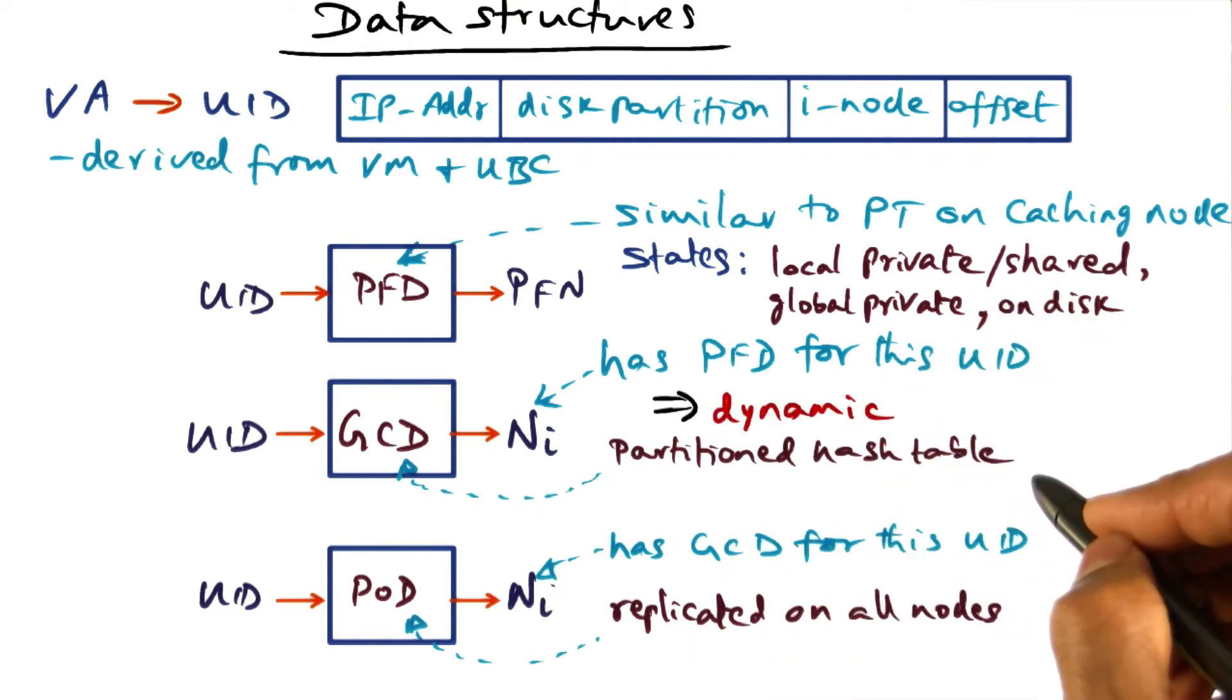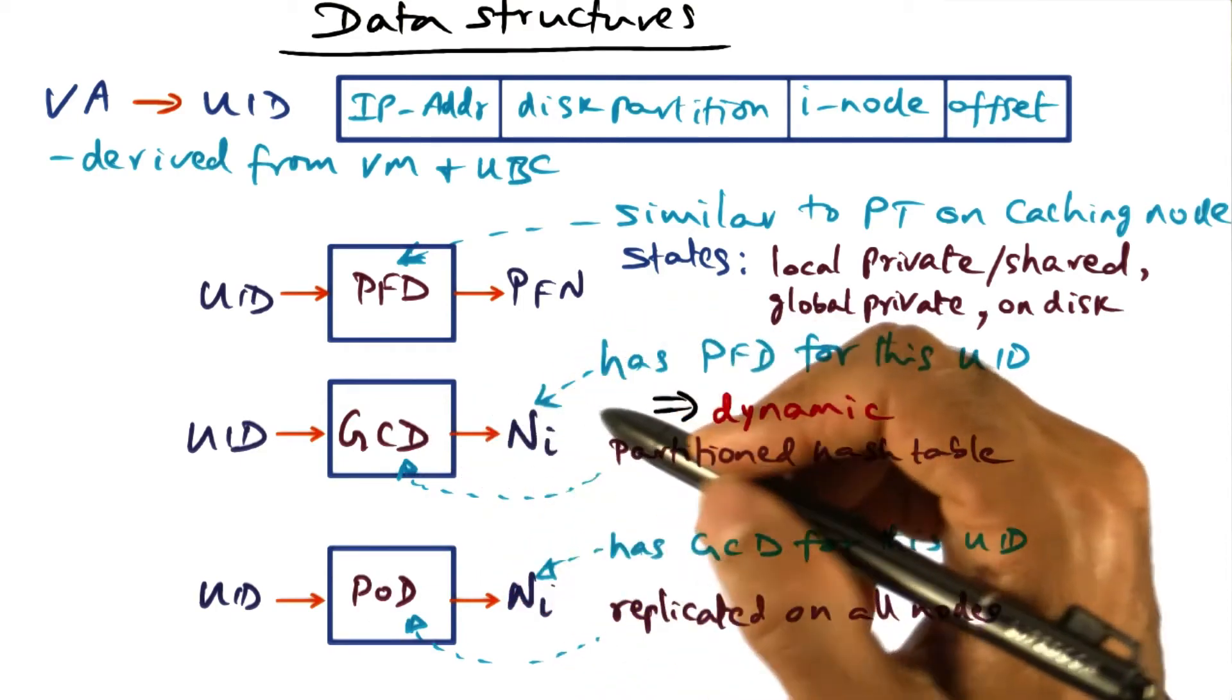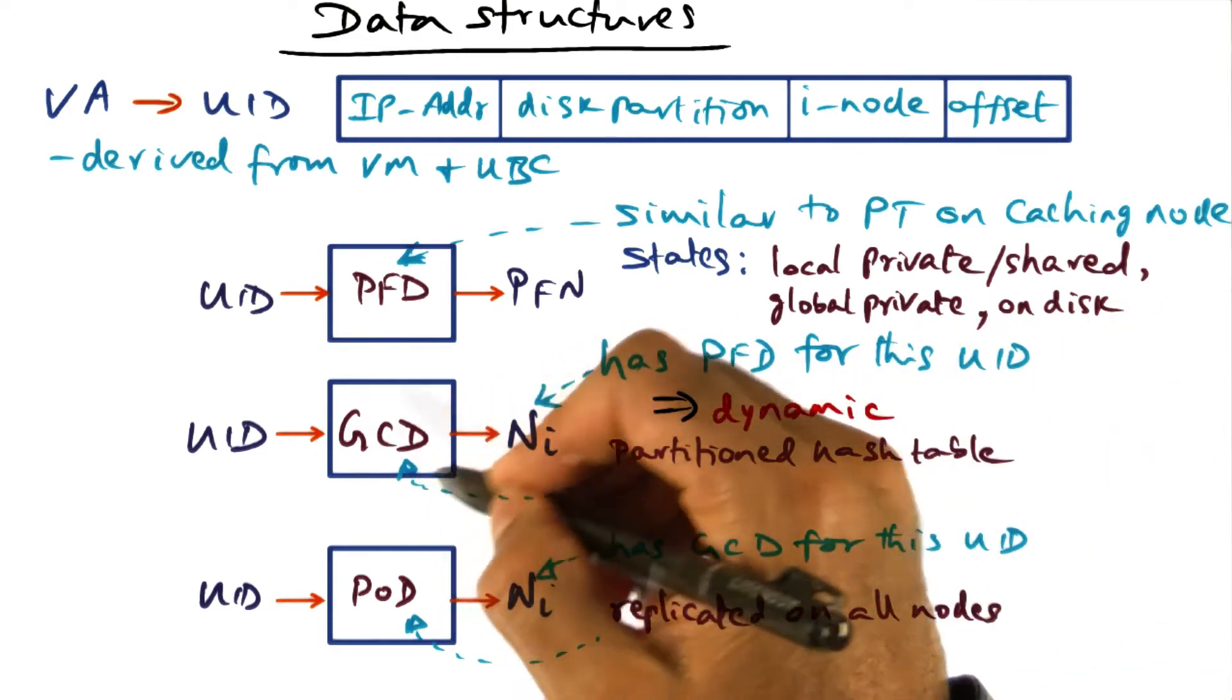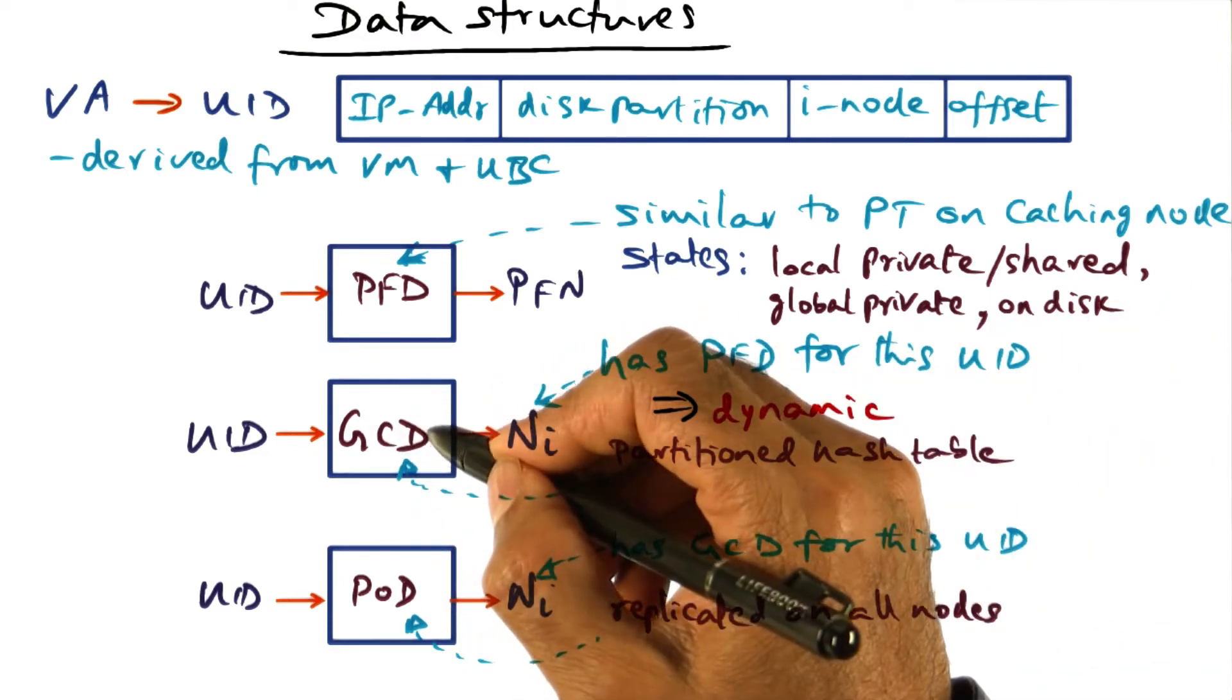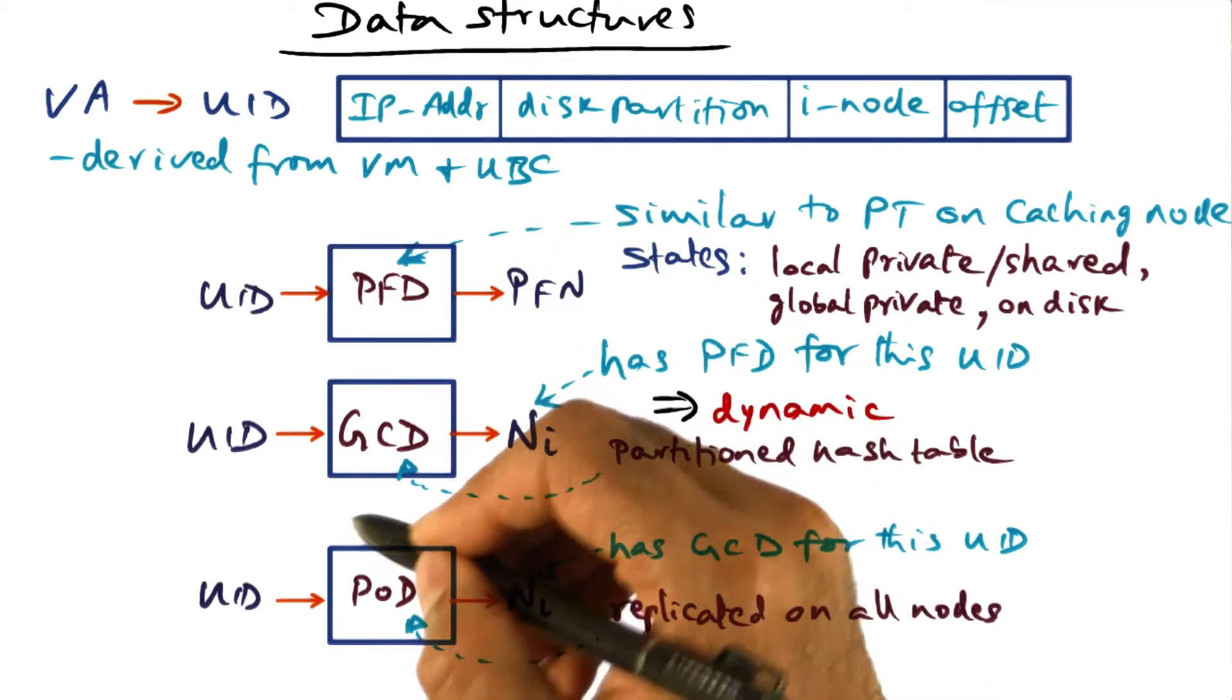It's a partitioned hash table. So given a UID, I can say, well, I go to this GCD and the GCD will say, what is the PFD that has this UID? Because it is a partitioned hash table, even though a part of this GCD is on every node, every node may not be locally able to determine where the PFD is.